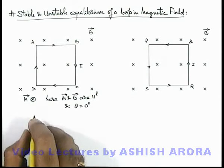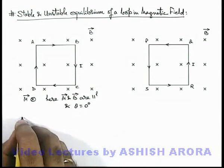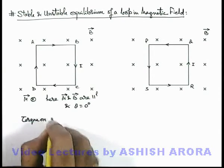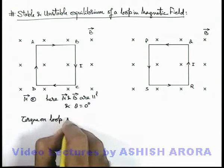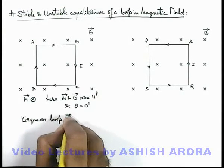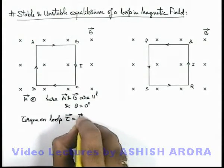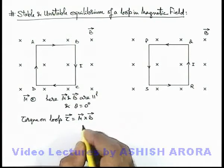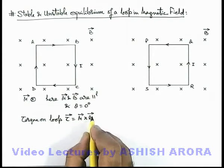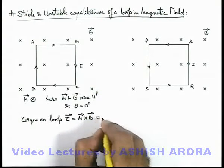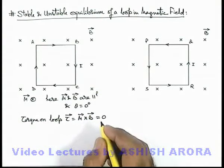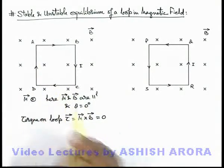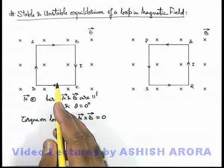So in this situation, if we calculate the torque on the loop, this torque is written as m cross B. In this situation it will be mB sine theta, and this can be taken as zero. If there is no torque acting on the loop, we can say that the loop will be in equilibrium.